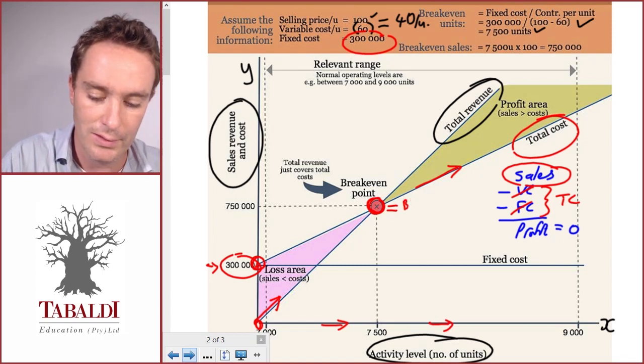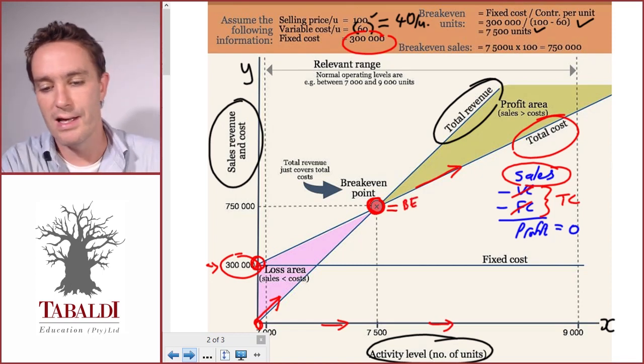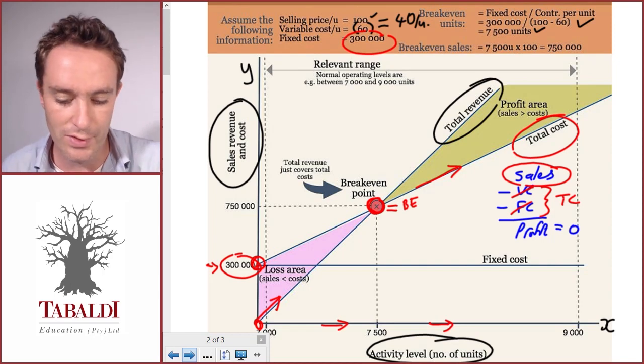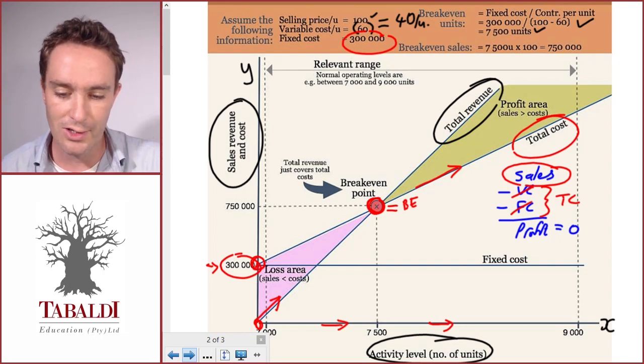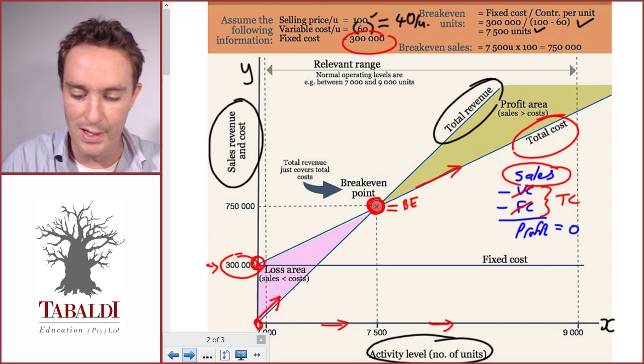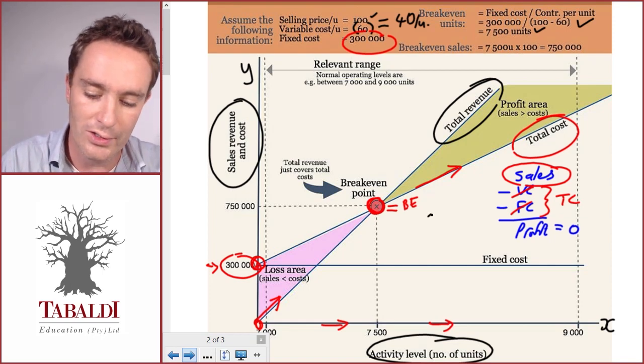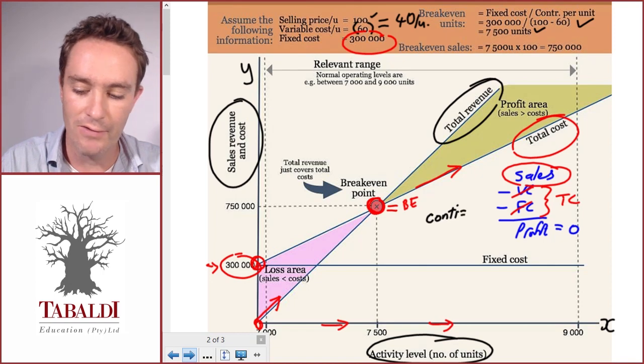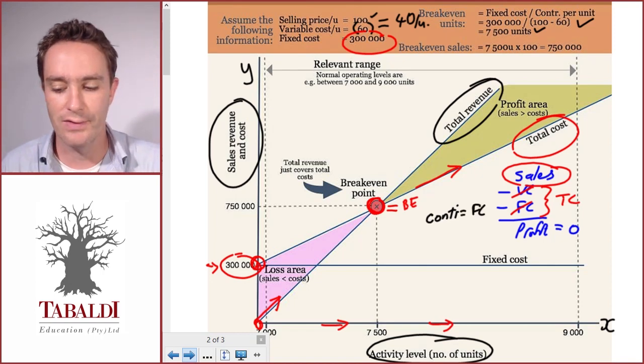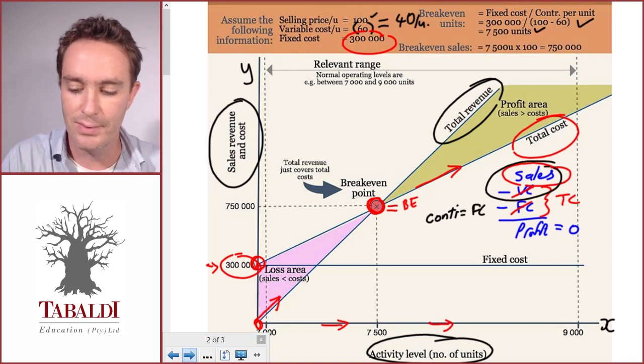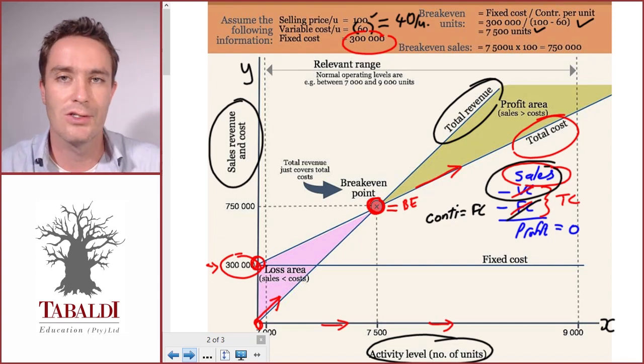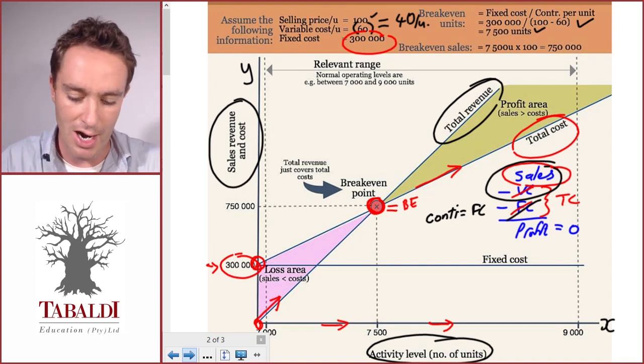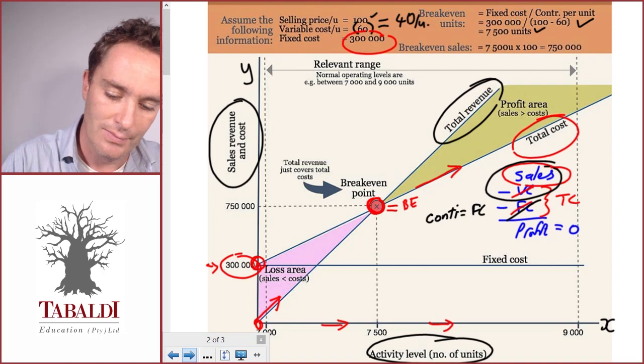Another way to look at it: if you think of our earlier examples of calculating break-even, when our contribution equals our fixed costs we also break even. If our sales less our variable costs equals our fixed costs, we'll make zero profit.